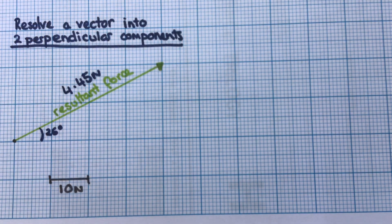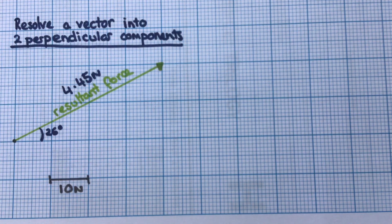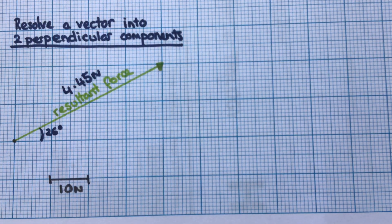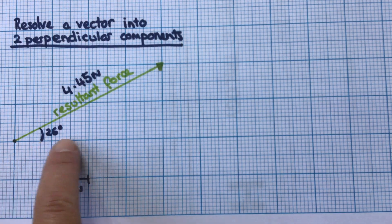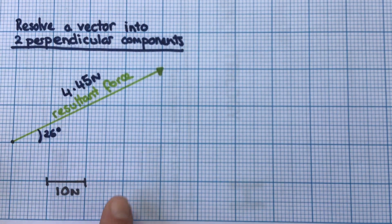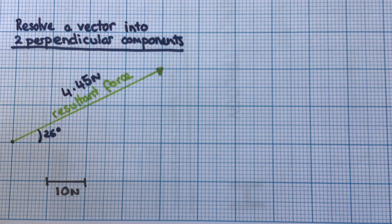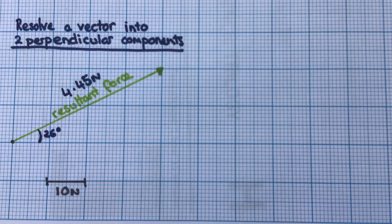We start with the resultant vector and work backwards to find the two perpendicular components. These components are going to be at right angles, so on graph paper we're looking for a horizontal vector and a vertical vector that when added together give us this overall resultant vector.